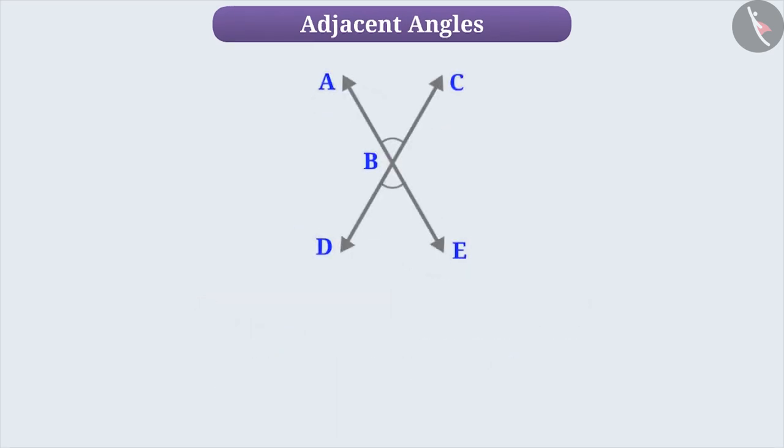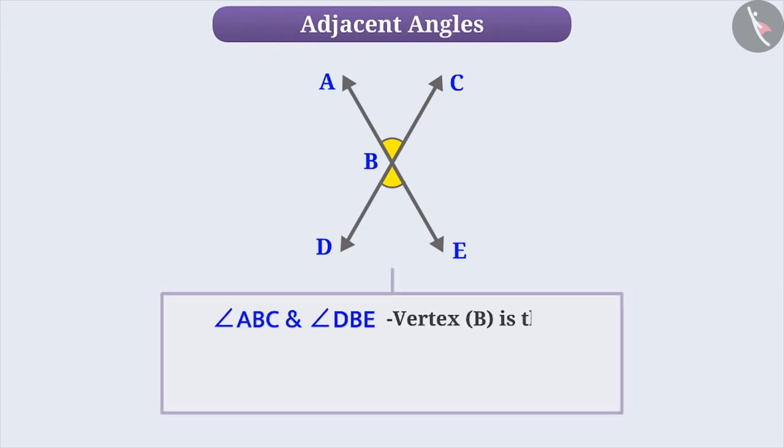Now, look at this figure. Do you think the angles shown here are Adjacent Angles? Let me tell you. In this figure, the vertex of both the angles are the same. But they do not have any common sides. Therefore, the angles shown in this figure are not Adjacent Angles.